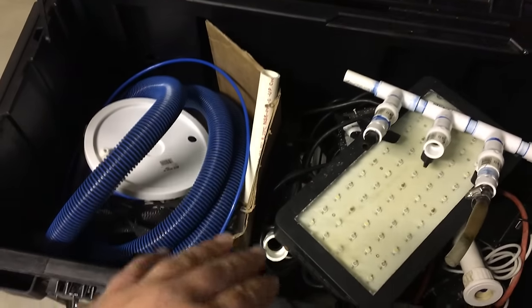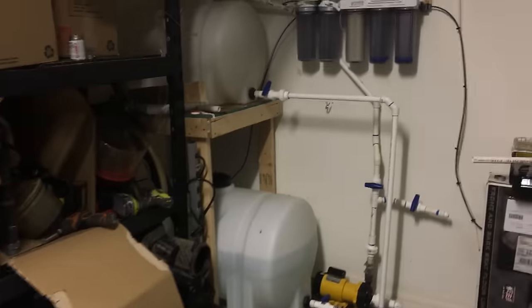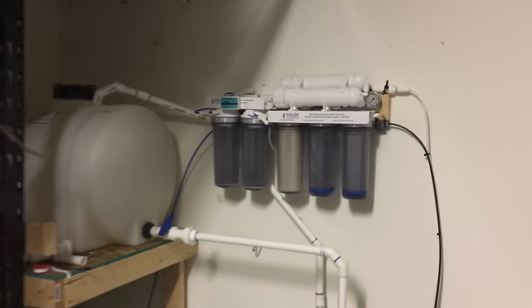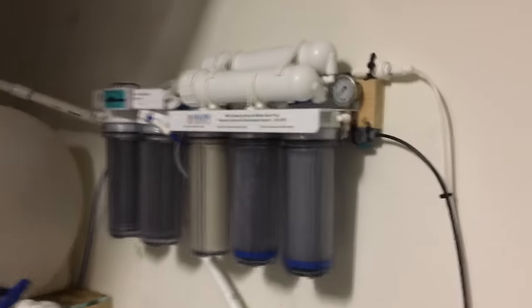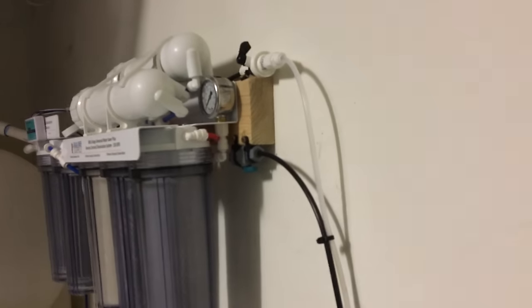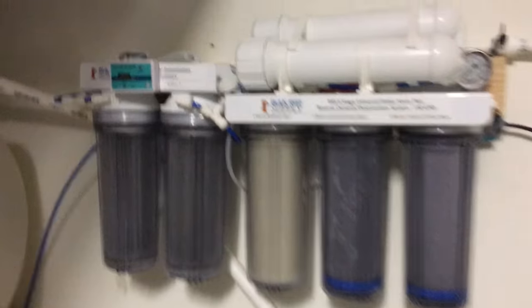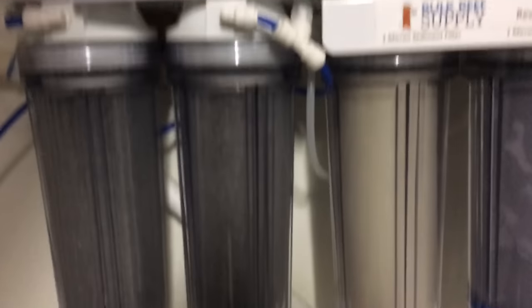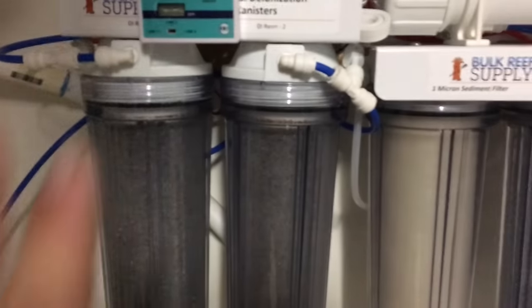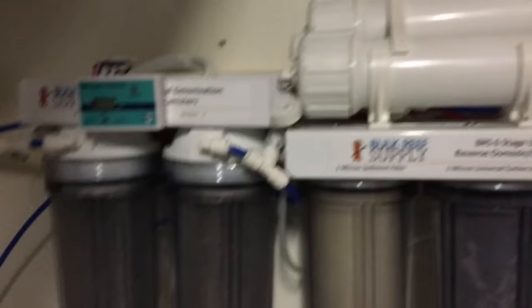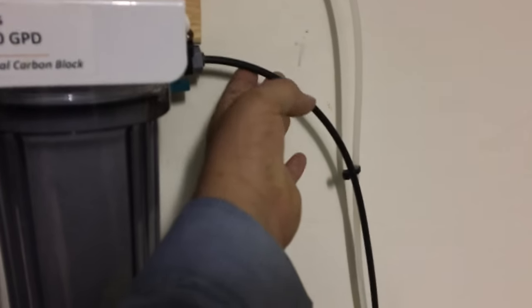Here is the RO setup. I got the RO system suspended from a 2x4 that's drilled into the studs. It's the six-stage unit. I tried to mount everything as cleanly as possible as far as the RO/DI equipment. I have a feed tube that comes in here from my hose bib in my backyard.